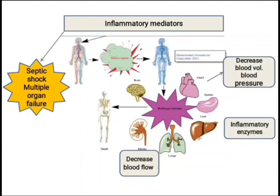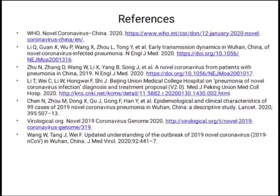People with different immune systems respond to the disease differently. In some they might show common illness, and in some it may show respiratory failure and multiple organ failure. So this is what COVID-19 can do inside our body.